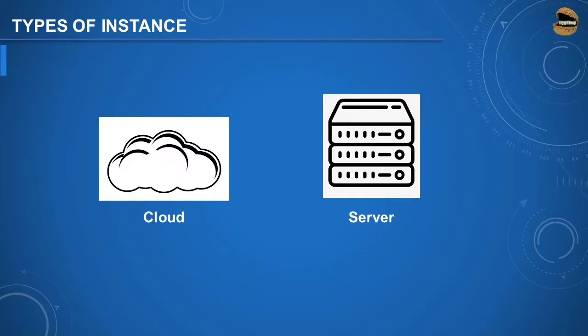Jira comes with two different variants. One is the cloud instance and the second is the server instance. The cloud instance is hosted somewhere else, and the server instance can be hosted within premises. Let's understand more about the details and differences between these two types of instances.